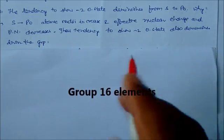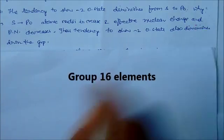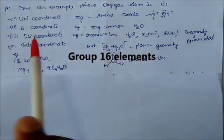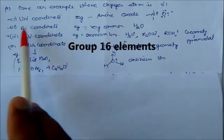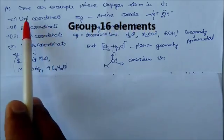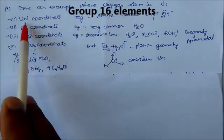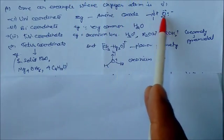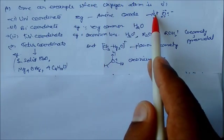Given examples where oxygen atom is unicoordinate, bicoordinate, tricoordinate, or tetracoordinate. Unicoordinate example is amine oxide, where one oxygen is bonded with nitrogen. This is positive charge on nitrogen and negative on oxygen.